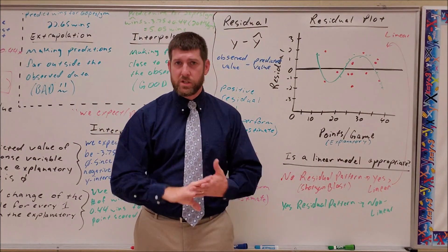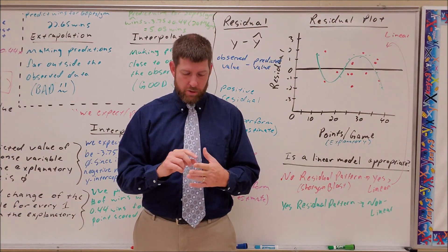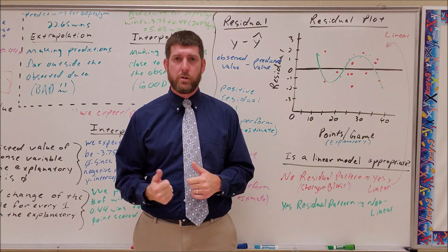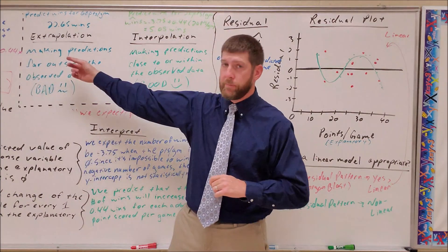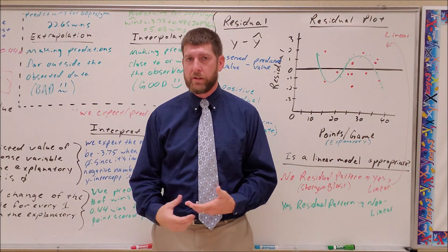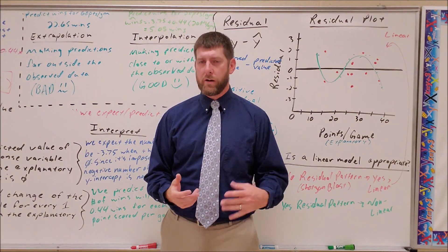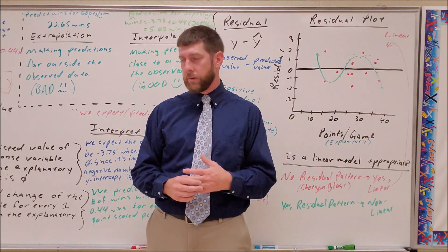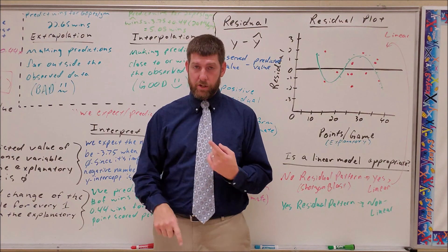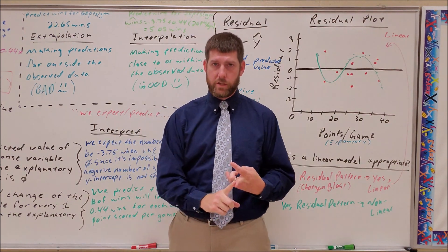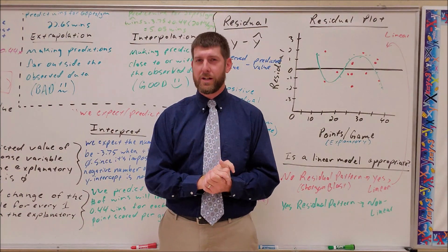That's it for Part 1 of least squares regression. In Part 2, we'll look at all the components of how this equation is derived — what the calculator is doing — and another measure of variability and model usefulness: the coefficient of determination. We'll cover the calculation for the least squares regression line and the coefficient of determination in Part 2, so make sure you check that out. I'll see you in class tomorrow.